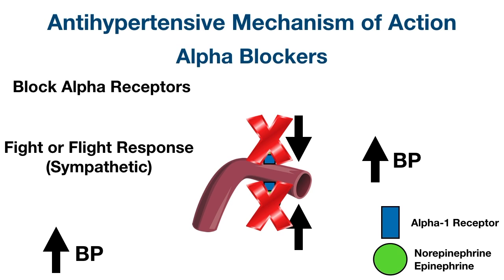If we block alpha-1 receptors on blood vessels using alpha blockers, then norepinephrine and epinephrine can't bind to the receptor. Vasoconstriction will decrease, and this will help to control high blood pressure as a result.